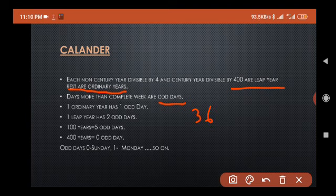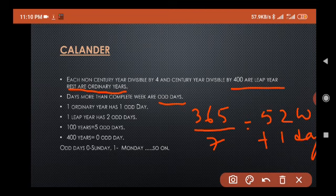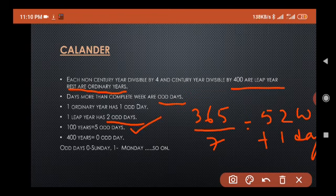One ordinary year has only one odd day. How? 365 days total in a year for ordinary, so if you are dividing it by 7, we are getting 52 weeks plus one day. That means one day is odd day. For a leap year, how many odd days will be there? One day plus one day extra for leap year, because February is having 29 days, so one more day. That means odd days will be two odd days in leap year. If 100 years are there, then how many odd days? Five odd days. For 400 years it will be zero odd days.